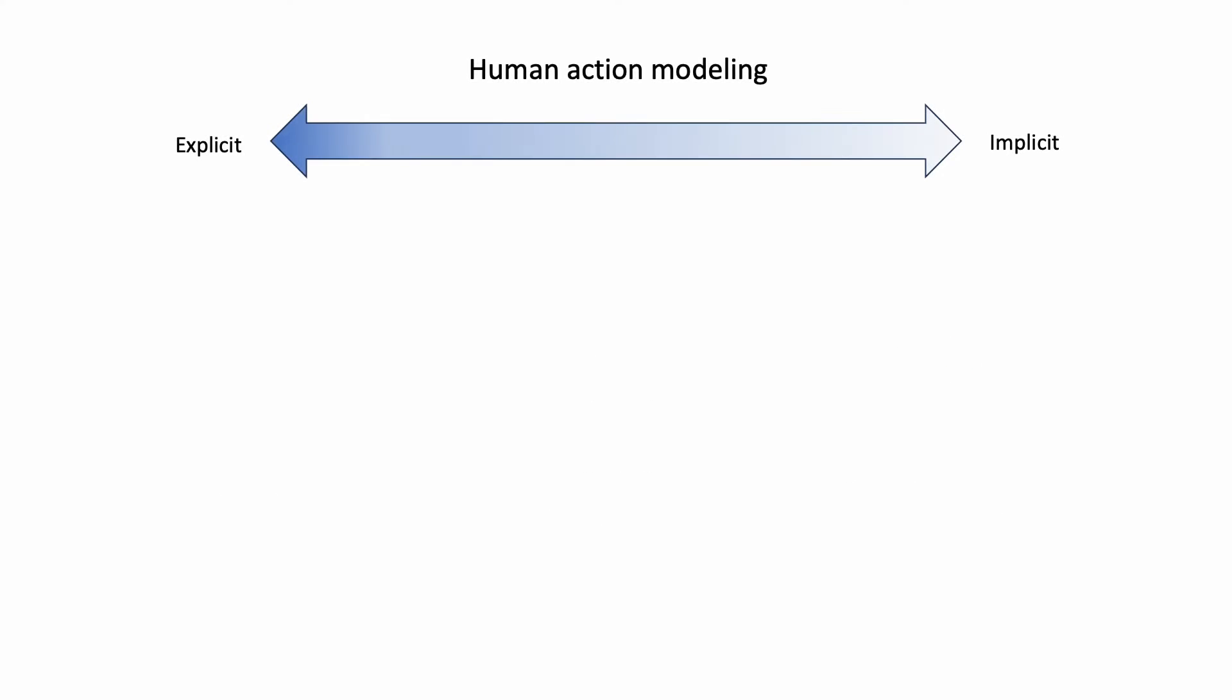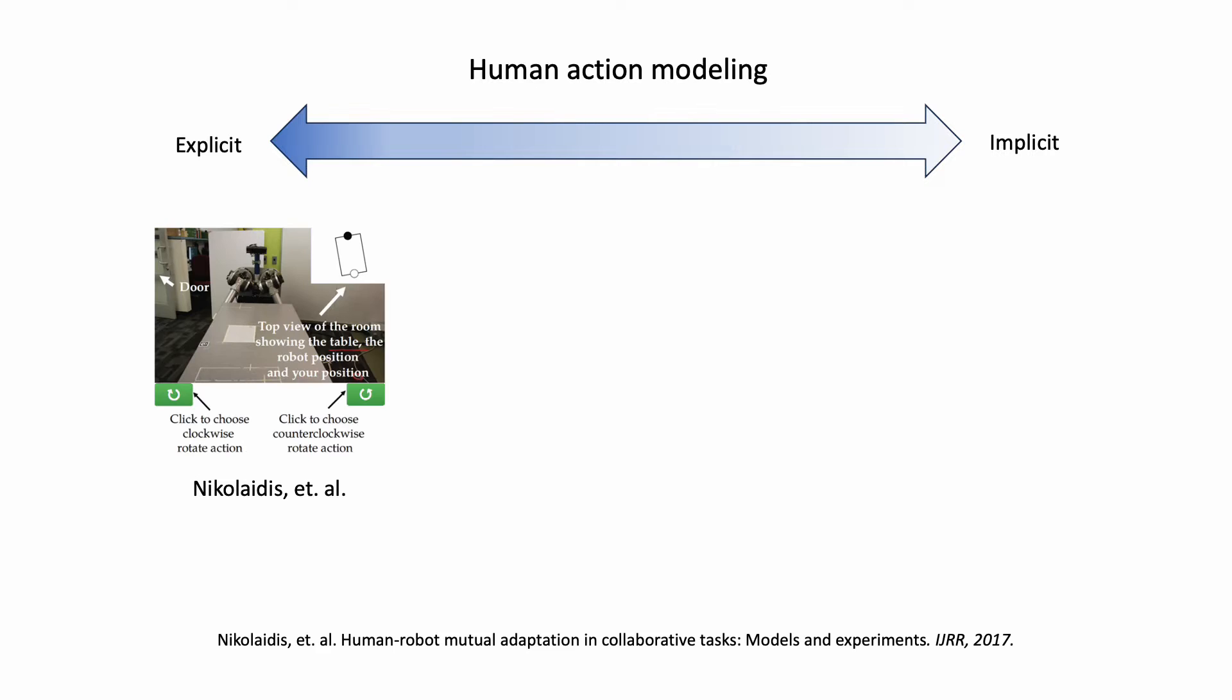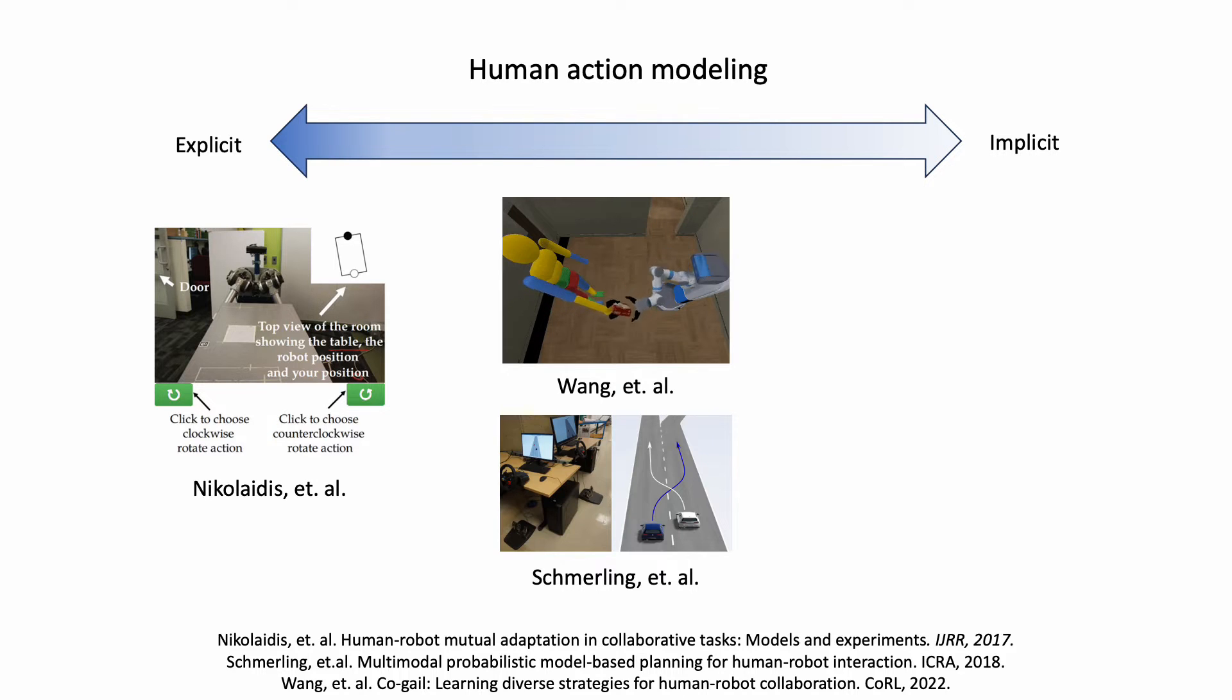Prior works in human-robot interaction have generally fallen along a spectrum defined by the degree to which the human is modeled. On one end, methods that explicitly model the human must discretize the state action space to tractably solve for robot actions. Other works trade off interpretability to learn latent spaces of human behaviors used for robot planning or policy learning and demonstrate more dynamic behaviors in the continuous state action space.